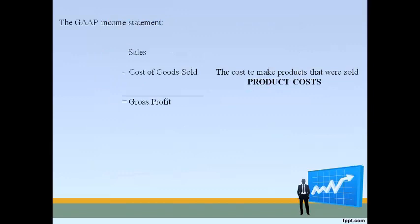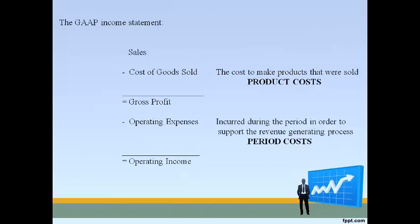The first part of the income statement reports profit associated with selling inventory only. Cost of sales is the cost of making the products that were sold to customers. Product costs are recorded in inventory first and expensed as cost of goods sold in the period the inventory is sold — this accomplishes the matching principle. Period costs are also called operating expenses and are expensed in the period the cost is incurred to support the revenue-generating process.